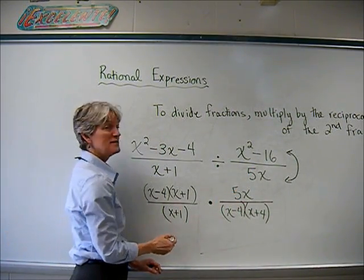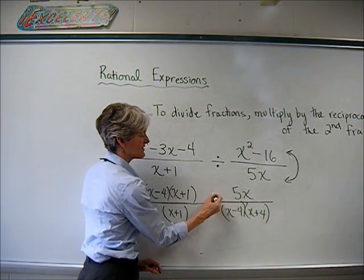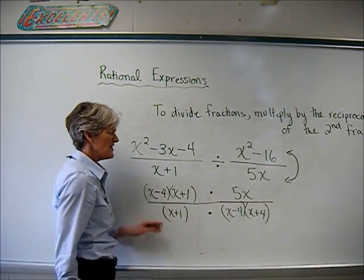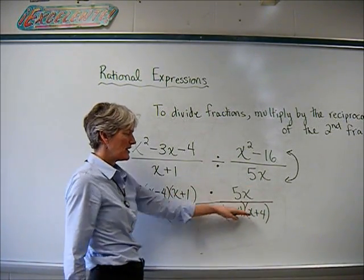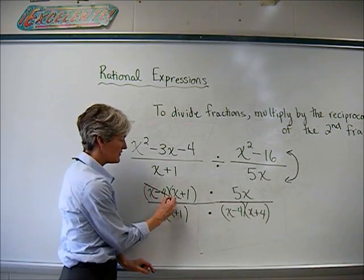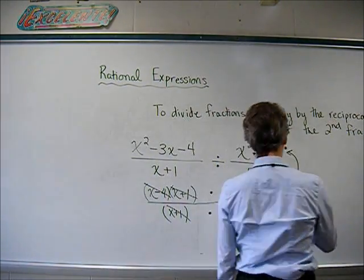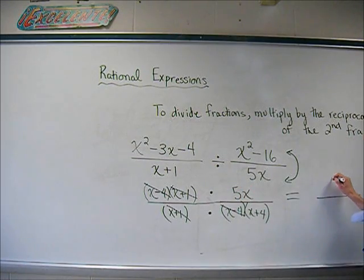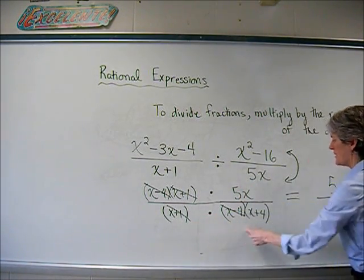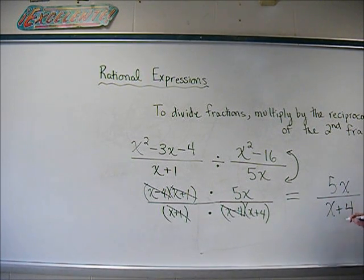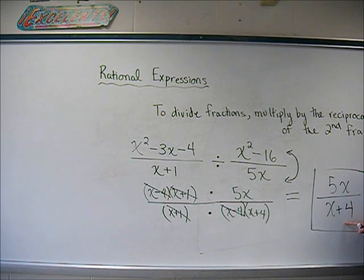Now I just do my dividing — what you guys call canceling. It's a blob of things multiplied on top and a blob of things multiplied on the bottom. x plus 1 divides with x plus 1 to equal 1. x minus 4 divides with x minus 4 to equal 1. I'm done. I have left in the numerator just 5 times x. In the denominator I have x plus 4. Can I divide those x's? No — I have two terms in the denominator, and I can't undo addition with division. So the final answer is 5x over x plus 4.